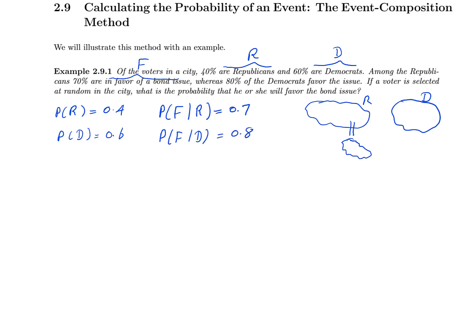If a voter is selected at random in the city, what is the probability that he or she will favor the bond issue? They are asking for the probability of F.